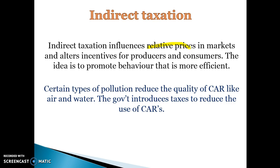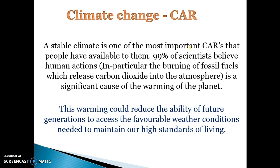Certain types of pollution reduce the quality of air and can lead to a depletion of common access resources. Climate change — a stable climate — is an example of a common access resource. Everyone has access to a stable climate. It's non-excludable, but it can be rivalrous in consumption.